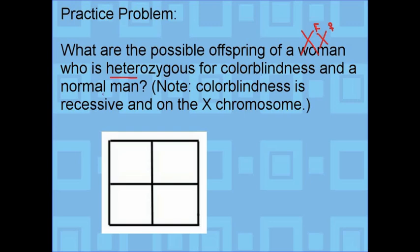And then for the normal man — remember that a man is XY. His Y chromosome is not going to have a superscript because the Y chromosome does not have this gene; only the X chromosome has this gene. And because he is normal, he's going to have a capital F because colorblindness is recessive. So we have X capital F and X little f for the mom, and X capital F and Y for the man.